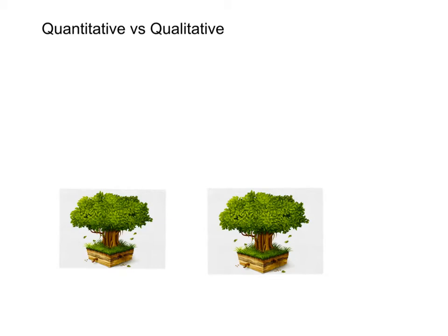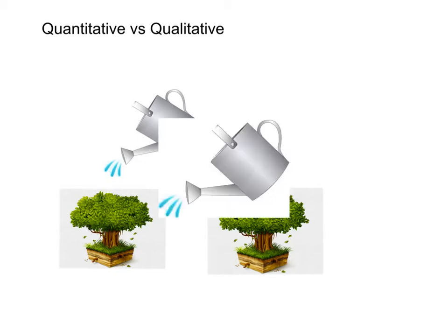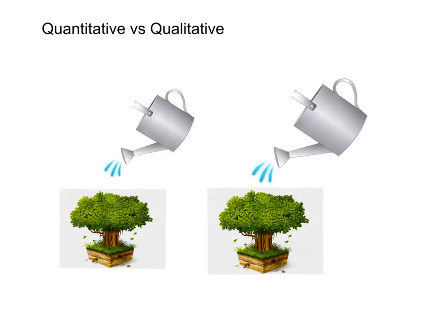If you are doing an experiment where you are watering your apple trees — we've talked about this before — we're watering our apple trees with different types of water. Our first apple tree is going to be our control, and it's just going to have regular water. Our second apple tree is going to have sugar water. This is what we are going to be manipulating.